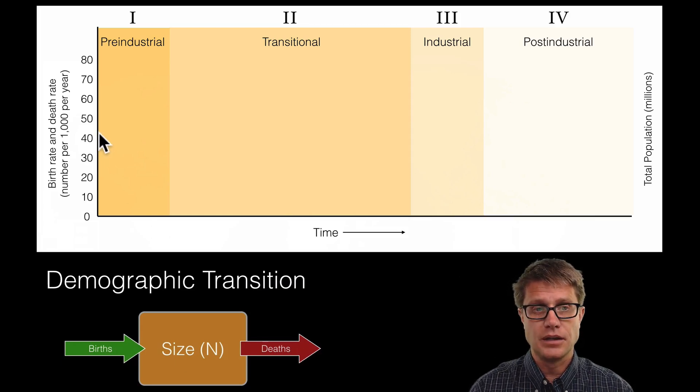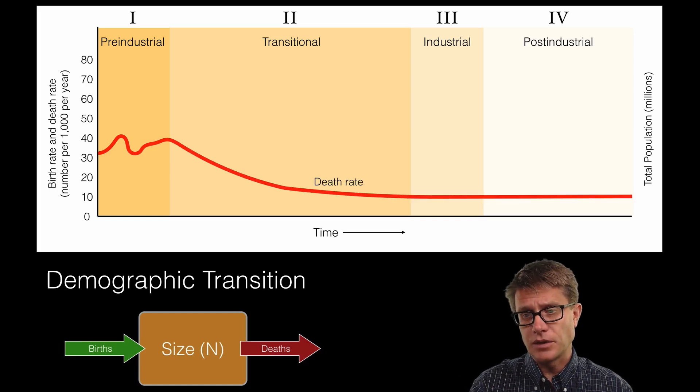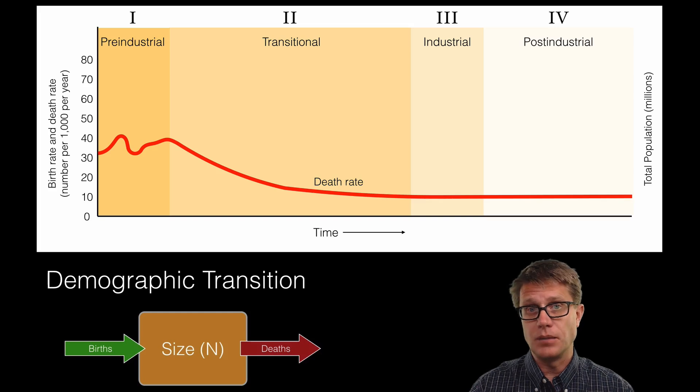And so if we look at the death rate, what happens to the death rate during industrialization? Well it will jump up and down. But eventually what happens is it drops way down and it remains stable.